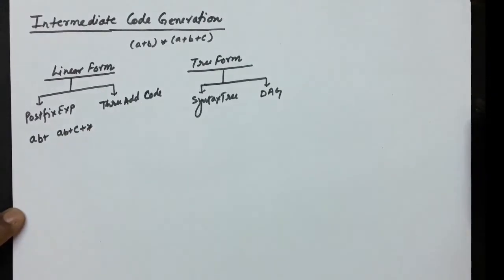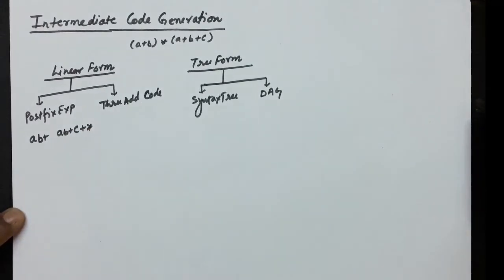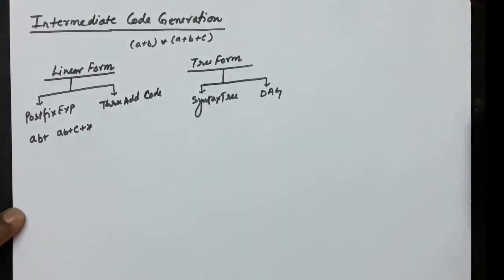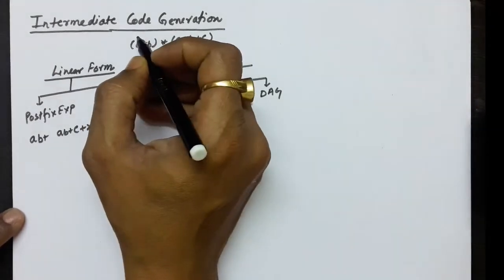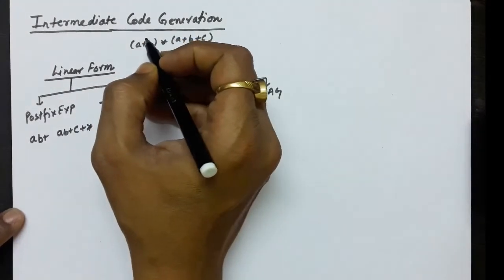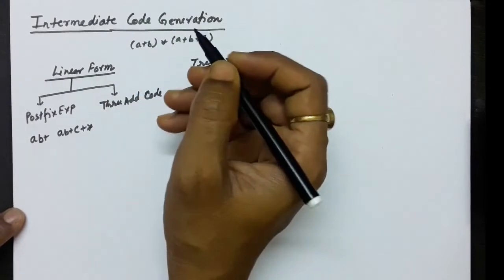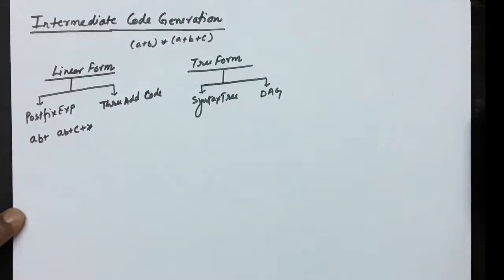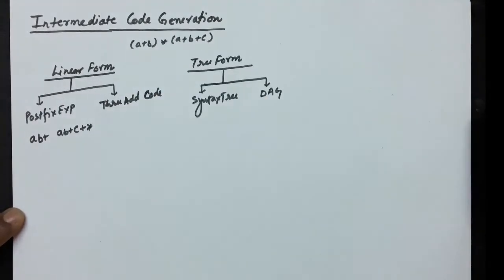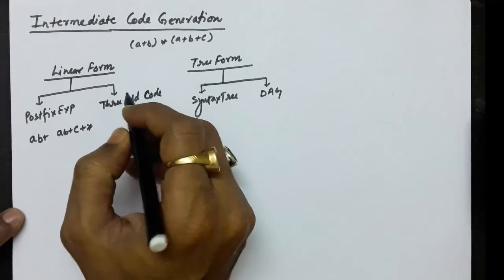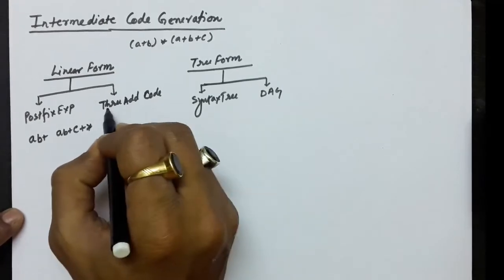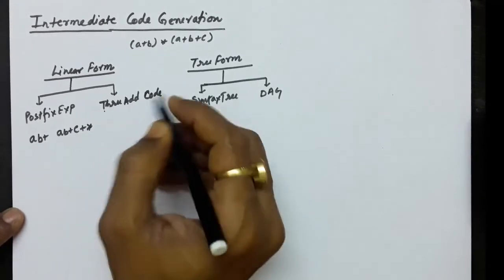The postfix expression for this infix expression would be: a b + a b + c + *. You must have already studied postfix expressions in your third semester while studying data structures or discrete mathematics.